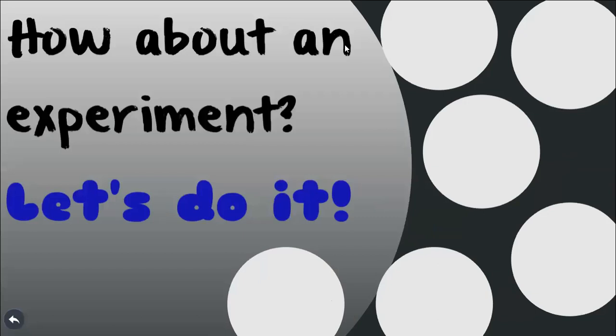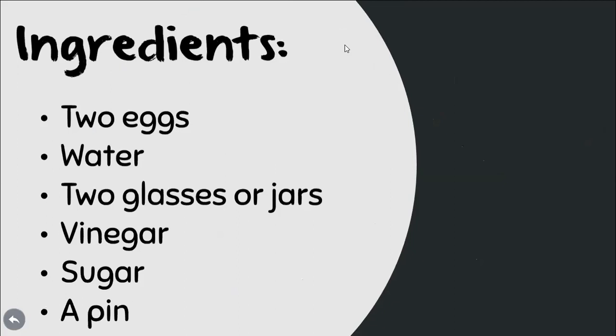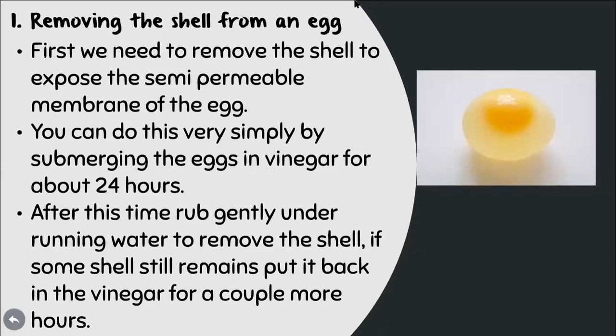Now we are going to see what you could do to conduct an experiment at home. The ingredients you need are just six: two eggs, water, two glasses or jars bigger than an egg, vinegar, sugar, and a pen. You should be able to find all these ingredients in your house easily.